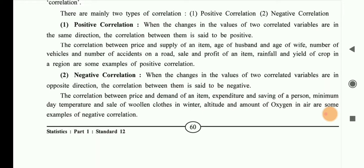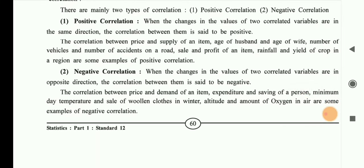For example, if the price of petrol increases, the transportation cost also increases. Here, the price of petrol is the cause and it affects the transportation cost. This is an example of positive correlation — both variables move in the same direction.